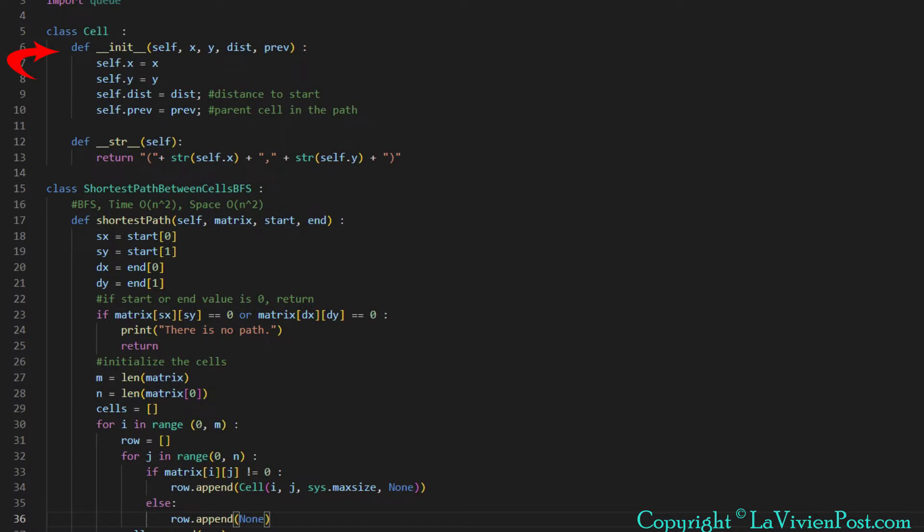Now let's take a look at the code for BFS. It will print the shortest path from the source to the destination. First, we define a cell class with the fields x, y, dist, and prev. X is the row number in the matrix. Y is the column. Dist is used to keep track of the distance from this cell to the source cell. Prev records the last visited cell or its parent cell. It helps to find the sequence of the cells along the path.